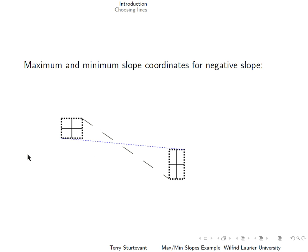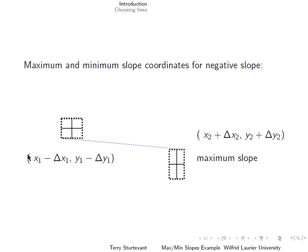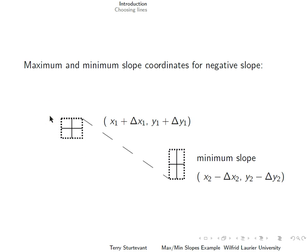For a graph with negative slope, the line of maximum slope has the left point where the x coordinate is decreased and the y coordinate is also decreased, and the right point where the x coordinate is increased and the y coordinate is increased. For the line of minimum slope, at the left point the x is increased and the y is increased, and at the right point the x is decreased and the y is decreased.